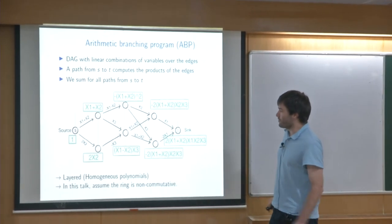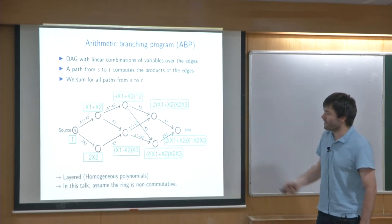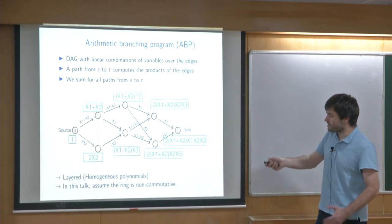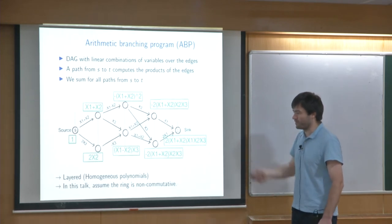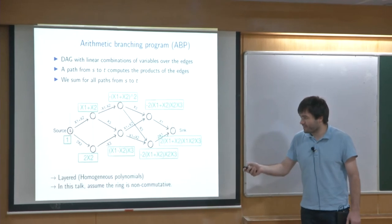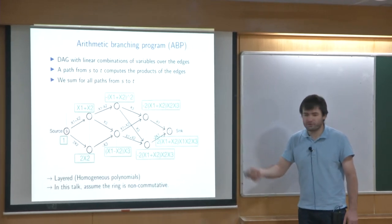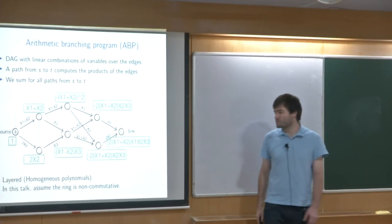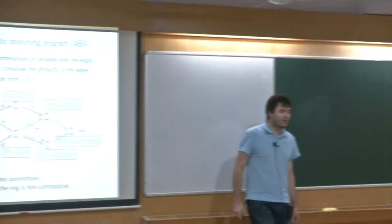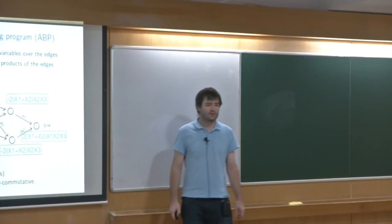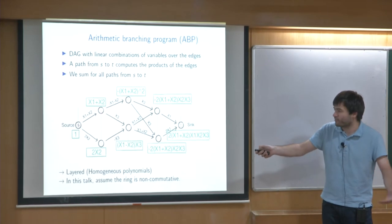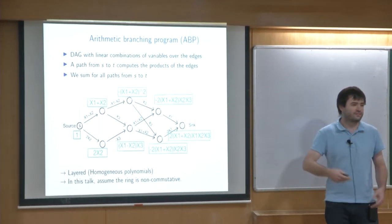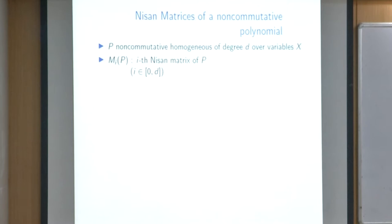Something important we'll use: we consider branching programs that are layered, meaning we can partition all the vertices and each edge goes from one layer to the next. In particular, if they are layered, at each step going from one layer to another you multiply by a linear form, which computes homogeneous polynomials. In this talk we always assume the ring is non-commutative, meaning the product is done left to right in order.